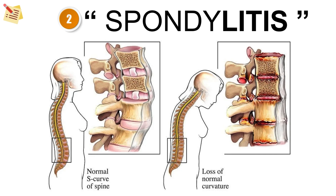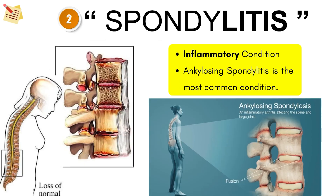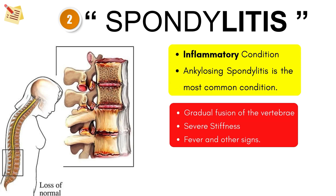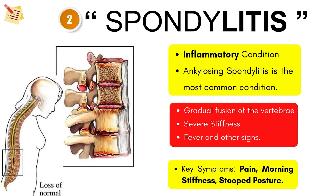Next is spondylitis, where the suffix '-itis' tells us it's an inflammatory condition. It happens more on the cellular level. The most common types are ankylosing spondylitis and sacroiliitis. There is gradual fusion of vertebrae and stiffness associated with fever. Key symptoms seen in this condition are morning stiffness, stooped posture, and pain.